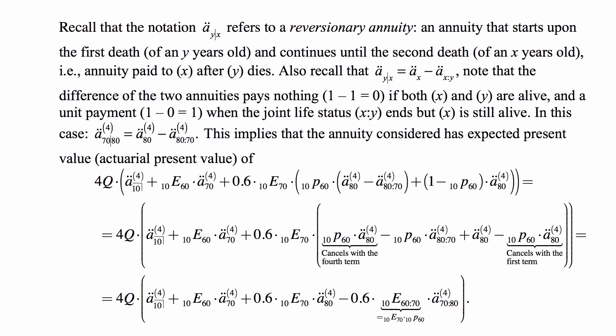So the annuity considered has this expected value where we just substitute the reversionary annuity by the difference of the two annuities. And instead of 10Q60, we write 1 minus 10P60. And then we multiply it out, and then we notice that 10P60 times A double dot 80 upper 4 cancels with the same term with a minus sign. So the first term is from the first expression, the second is from the second expression. And what we have left inside is minus 10P60 times A double dot 80 colon 70 upper 4 plus A double dot 80 upper 4. And we can also write the product of 10E70 times 10P60 as 10E60 colon 70. It's conditional on the joint life status survival, a pure endowment.